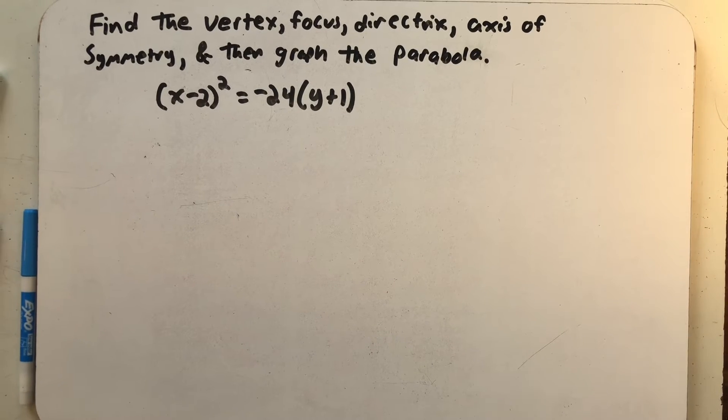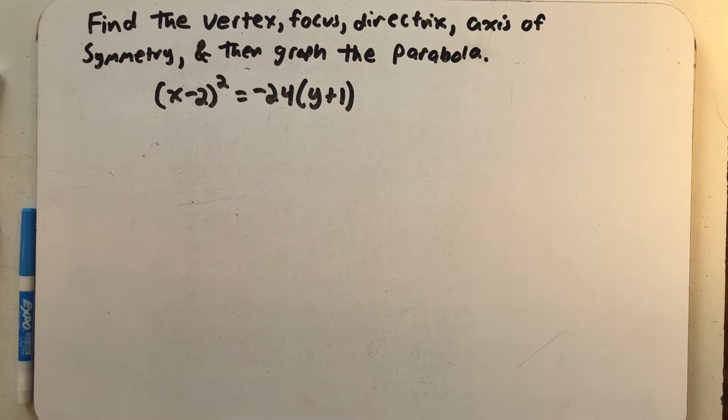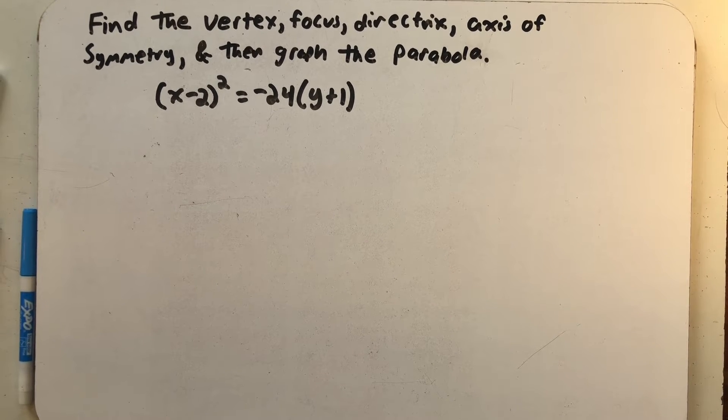Find the vertex, focus, directrix, axis of symmetry, and then graph the parabola. (x-2)² = -24(y+1).